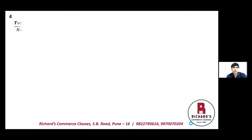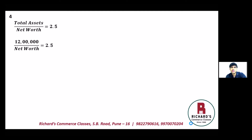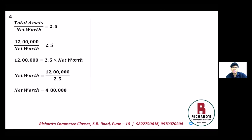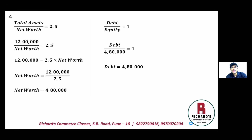Total assets to net worth is 2.5. Total assets is 12 lakhs, so net worth equals 12 lakhs divided by 2.5, which is four lakh eighty thousand. Net worth is equity. Debt equity ratio is 1, so debt divided by four lakh eighty thousand equals 1. Therefore debt is also four lakh eighty thousand.